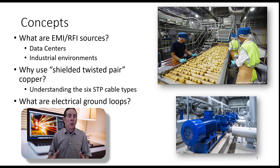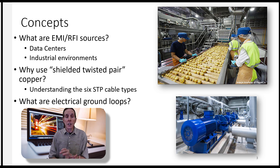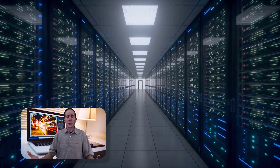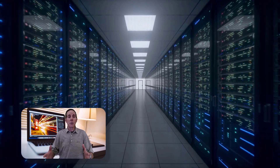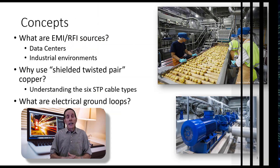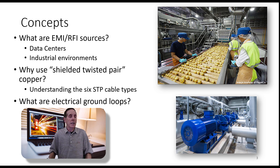It's very important to understand the sources of electromagnetic interference, which is very different than radio frequency interference. For example, in a data center they have thousands of servers — those are gigantic RF generators and they create lots of interference. In an industrial environment where you've got very large motors and three-phase power, those create EMI or electromagnetic interference.